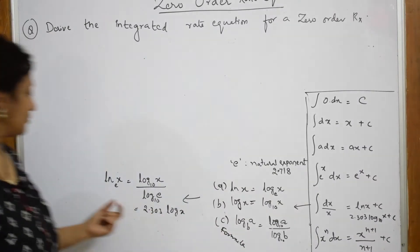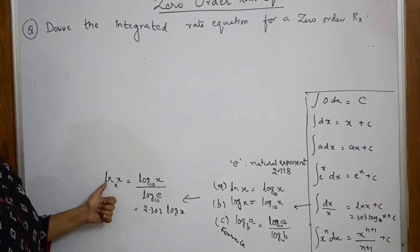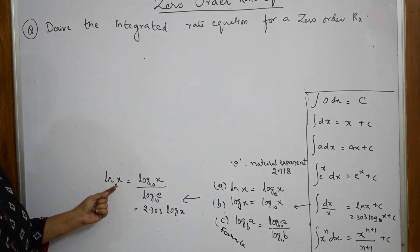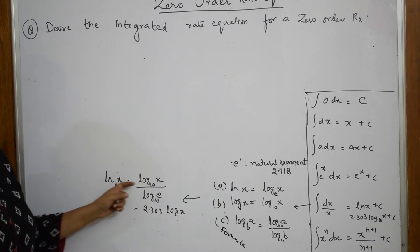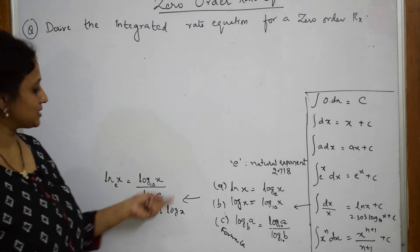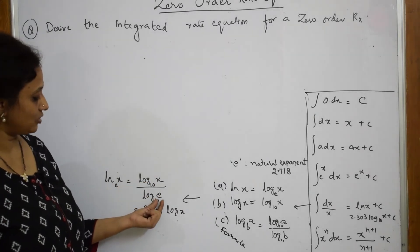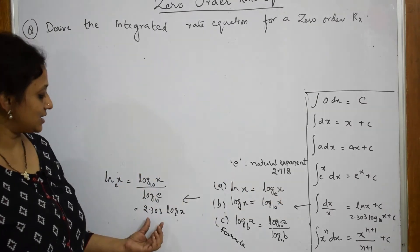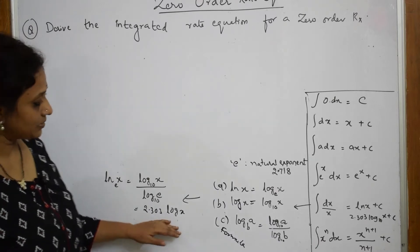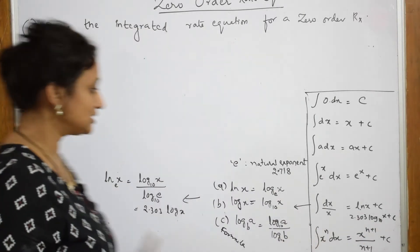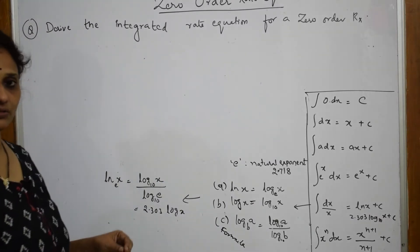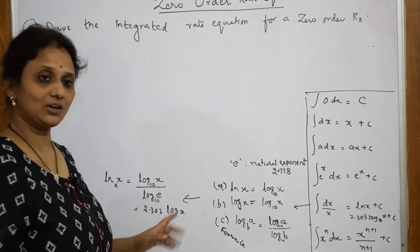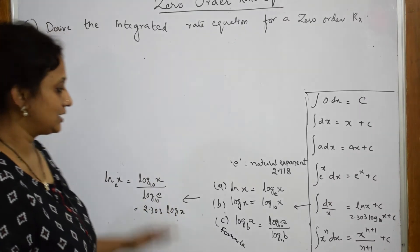So ln x equals log x divided by log e, and since e equals 2.718, solving this ratio gives 2.303 log x. Please note all these formulas in your books, as when you do your rate law equations — zero, first, and second order — all these formulas will be useful.